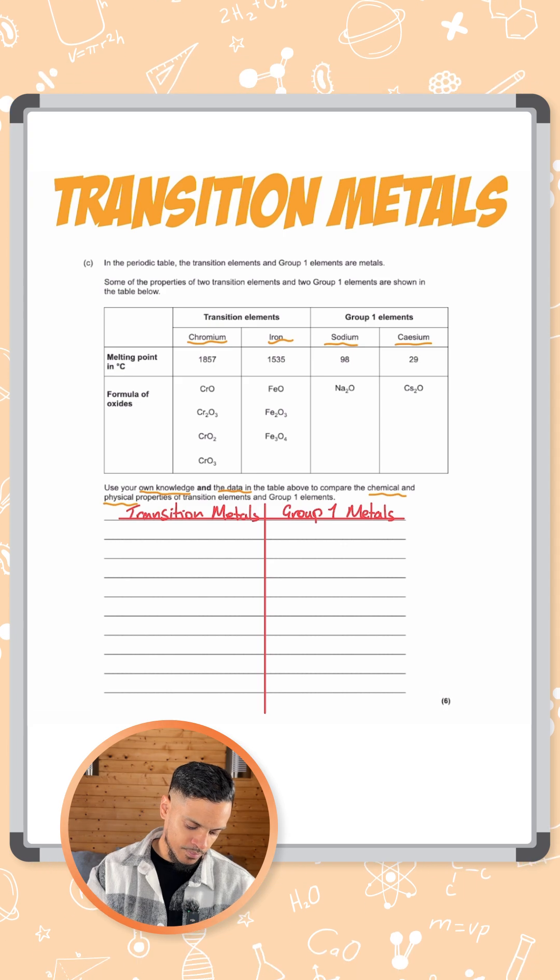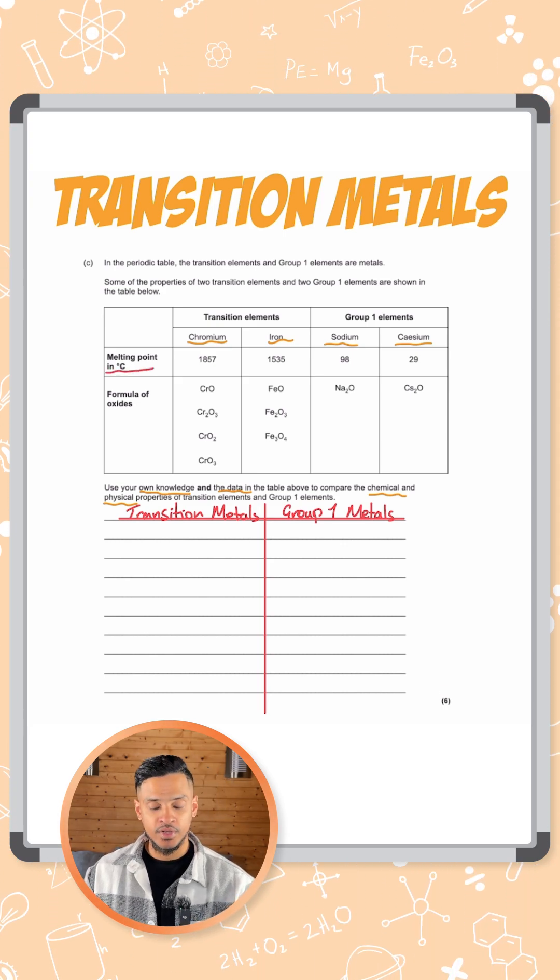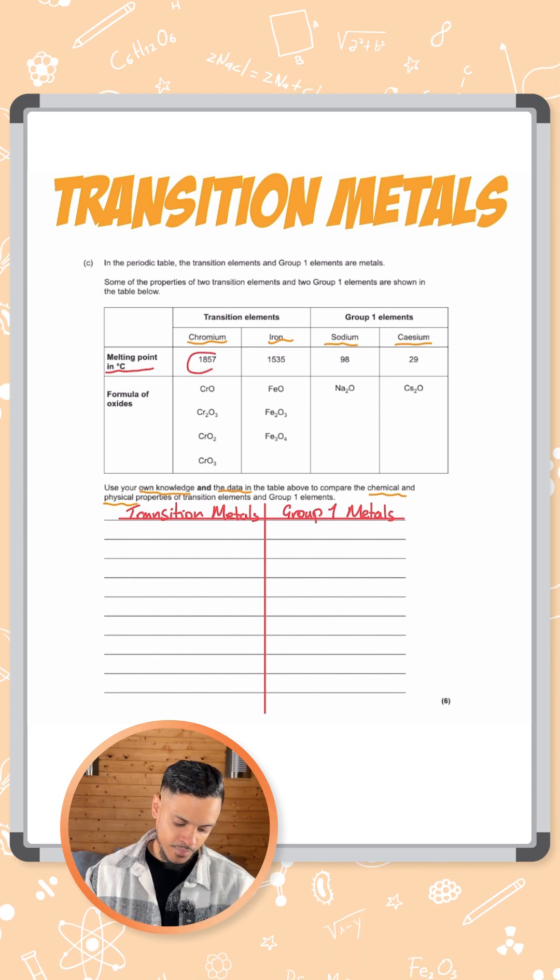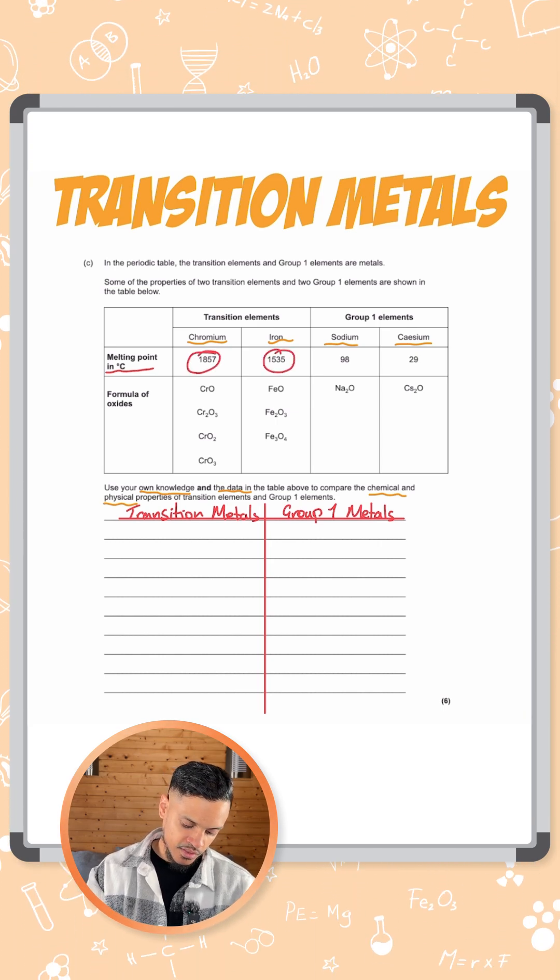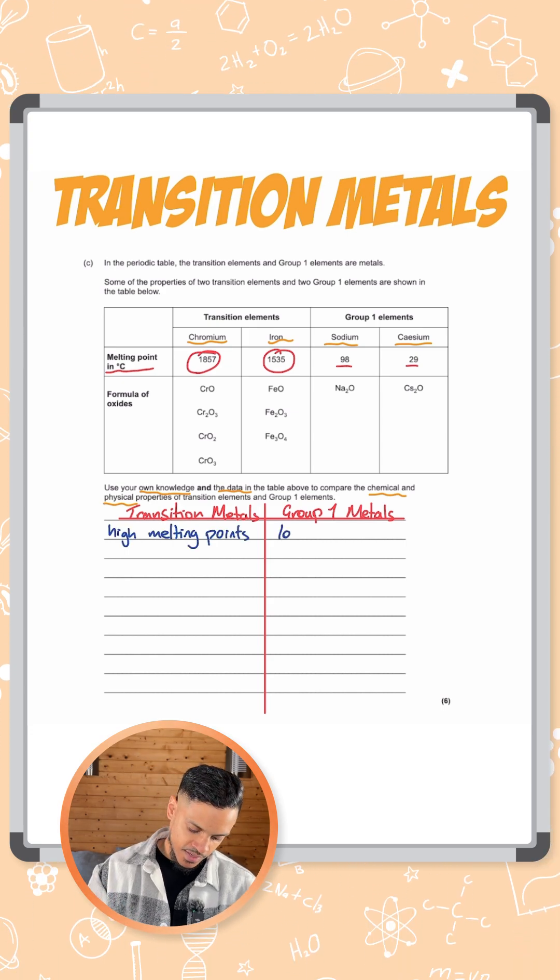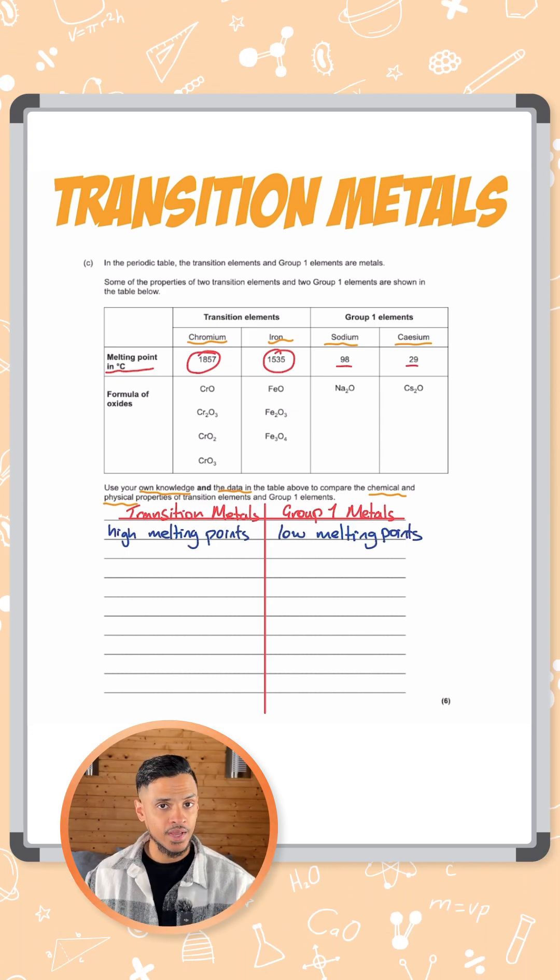We've only got two different comparisons here. So first one is the melting point. You can see quite clearly the melting points of the transition elements are much much higher than the two group one elements we have. So we can say high melting points for transition metals and low melting points for group one elements.